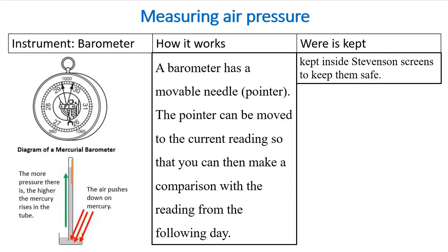Now let's look at other weather instruments. The instrument used to measure air pressure is called the barometer. A barometer has a movable needle or pointer that can be moved to the current reading so you can make a comparison with the reading from the following day, allowing you to know the difference in air pressure. It is kept inside the Stevenson screen to keep it safe.